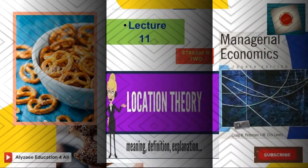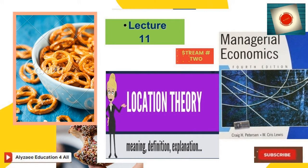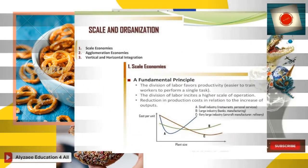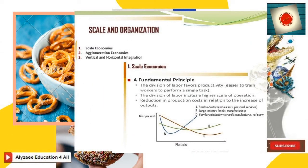Bismillahir Rahmanir Raheem. Assalamu alaikum. This is Amir Khan Alizai with lecture 11 stream 2. What is the Weberian representation? We will look at its contemporary relevance: decline in transport costs, more locational flexibility, terminal cost and non-linear transportation cost functions. It also depicts the importance of intermediary load break locations, the level of dematerialization of the economy, smaller and lighter products, and more added values. Inertia and cluster formation depicts real-world decisions — the outcome of optimization and accumulation of related firms. Scale and organization reflects scale economies, agglomeration economies, and vertical and horizontal integration.